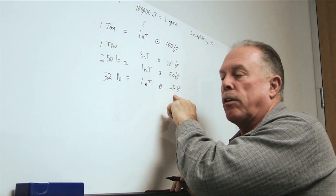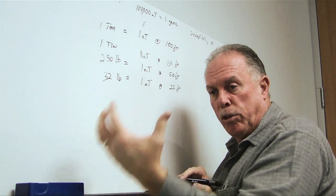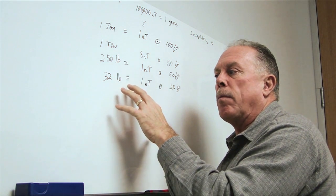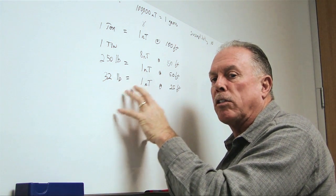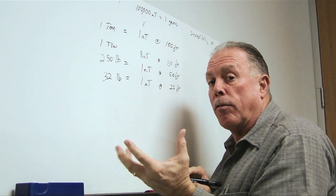A metal detector falls off as inverse sixth power, because of inverse cube going out and inverse cube coming back. So, the magnetometer has the ability to see targets at a much greater range than a standard electromagnetic type of device.